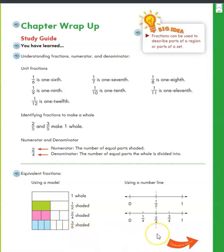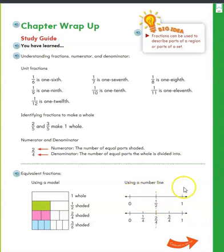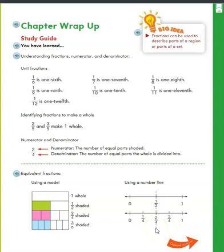We also learned how to spot equivalent fractions on a number line. Here we have our number line with zero and one. We split it into two equal pieces — right here is one out of two, so that's one-half. Then on the second number line, we split it into four equal pieces, and this one is two out of four, or two-fourths, which is equivalent to one-half.